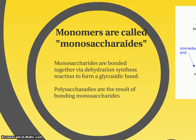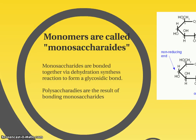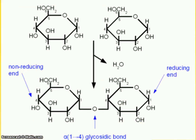A reaction called dehydration synthesis actually allows two of these monosaccharides to bind together. The bond that is made between them is a special kind of covalent bond called a glycosidic bond. In this picture, we can see a dehydration synthesis reaction occurring.